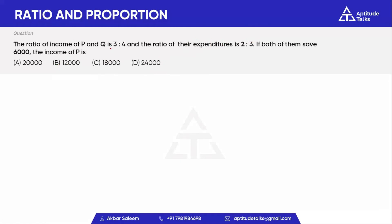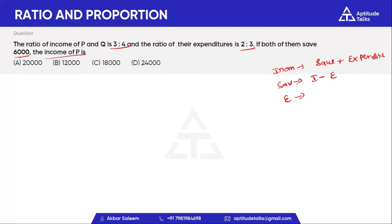Next: the ratio of income of P and Q is 3 to 4. The ratio of their expenditure is 2 to 3. If both of them save 600 rupees, the income of P is what? This model is a unique model. Income equals savings plus expenditure. Savings equals income minus expenditure. How much is the value of income minus expenditure? This is the key point.